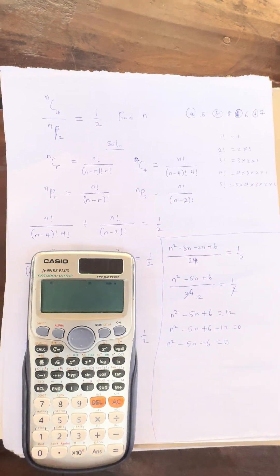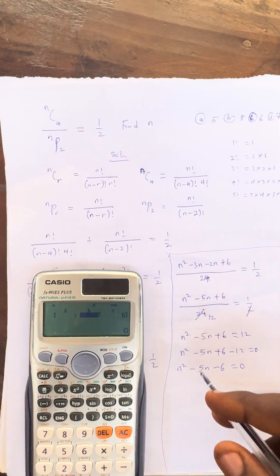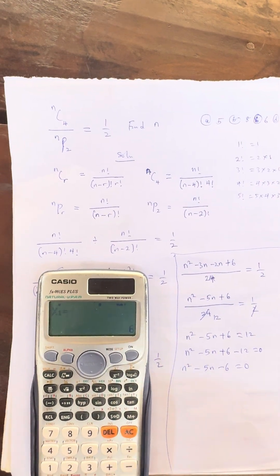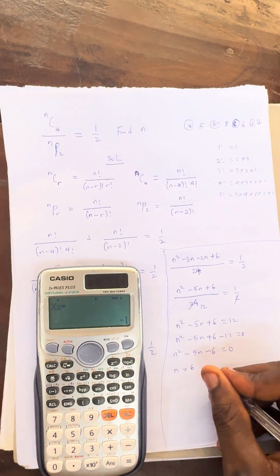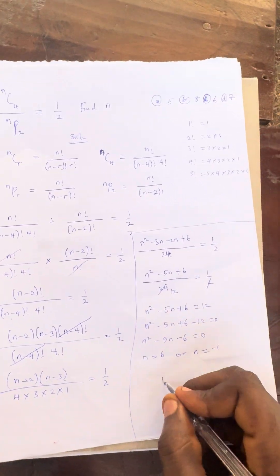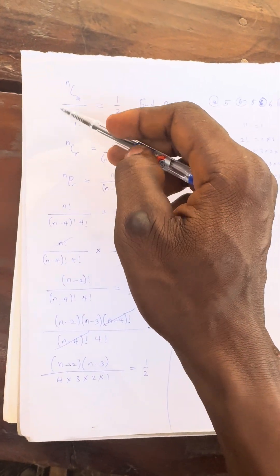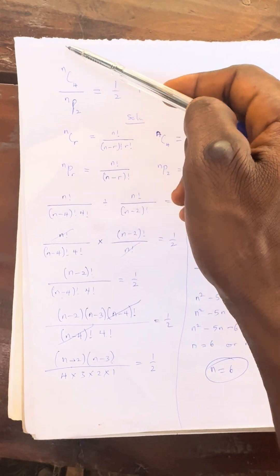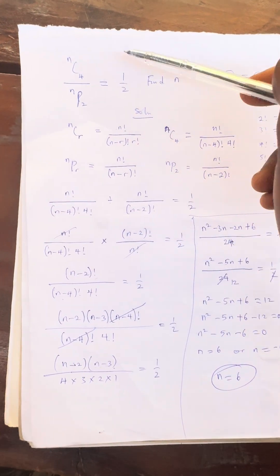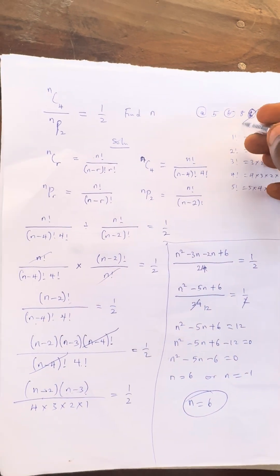We solve this quadratic equation. Factoring n squared minus 5n minus 6 equals 0 gives us n equals 6 or n equals minus 1. The correct answer is n equals 6, because n must be a positive value greater than the combination value. A negative value like minus 1 is not valid here. So the correct answer is n equals 6, which is Option C.